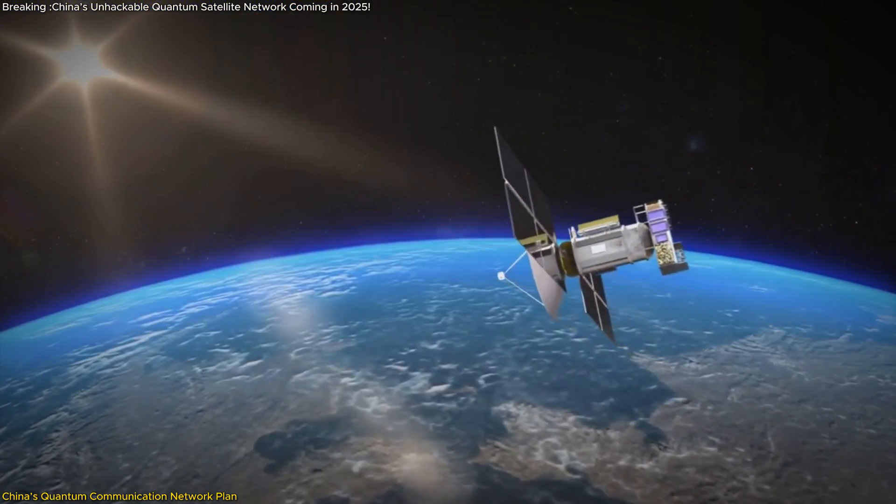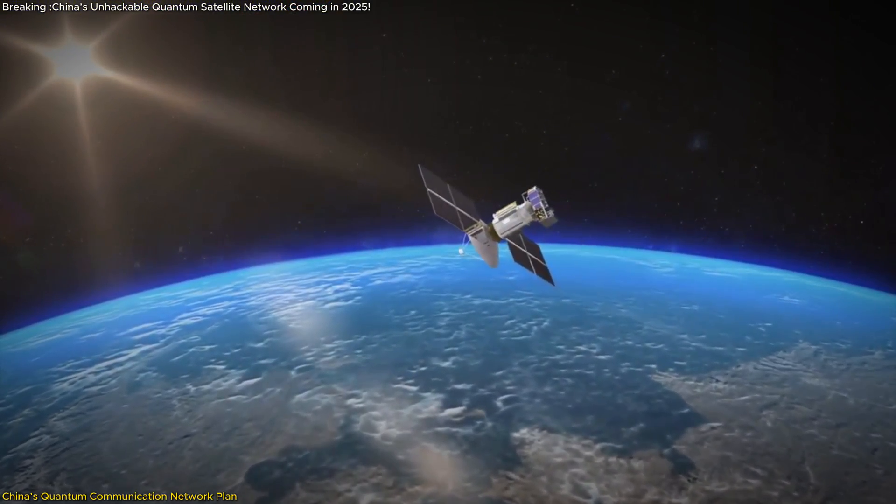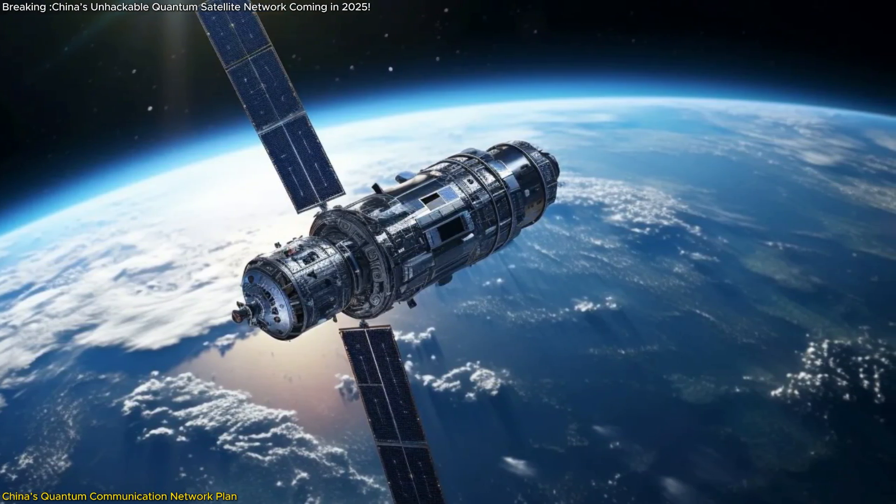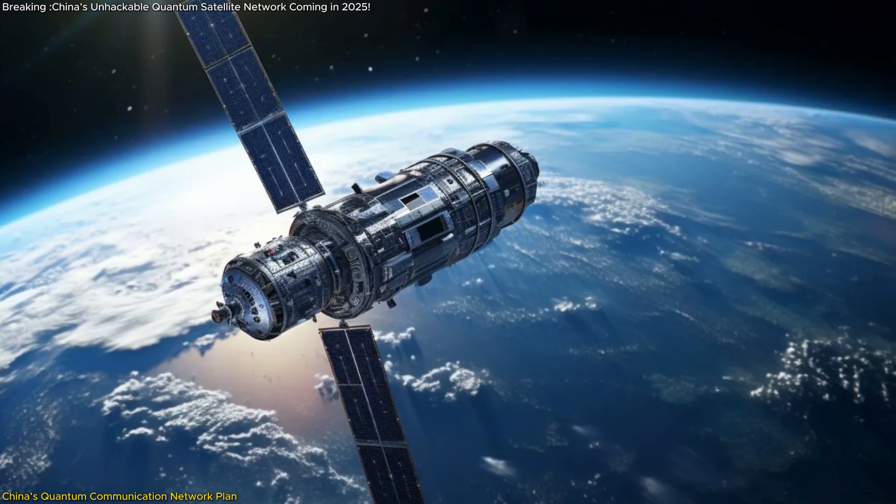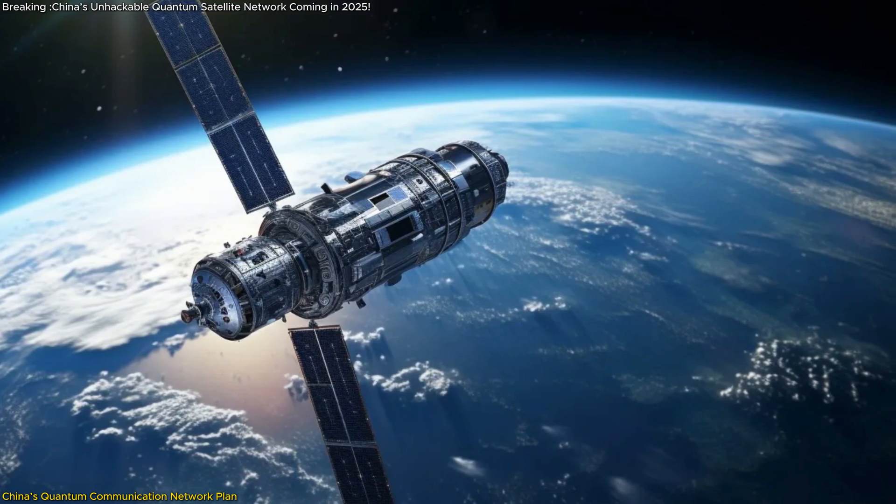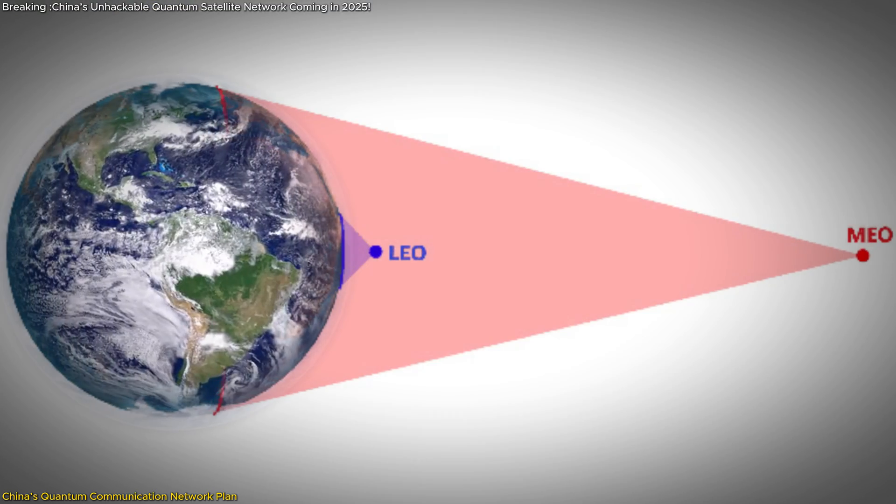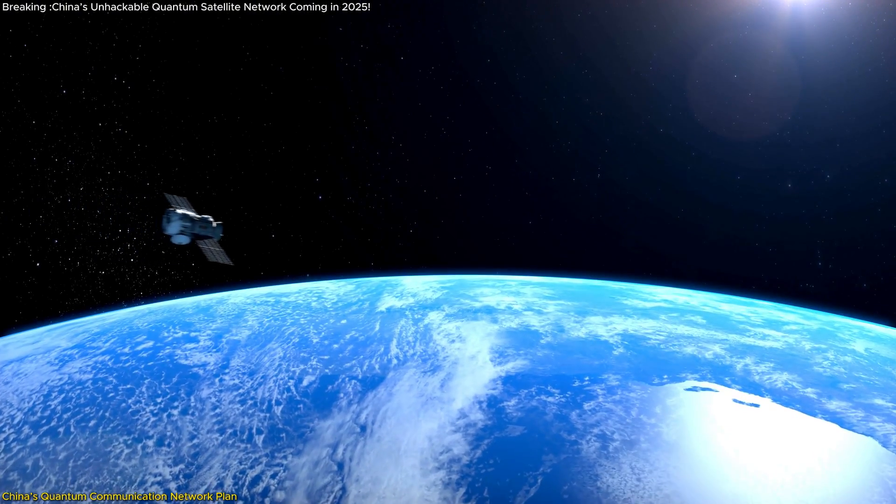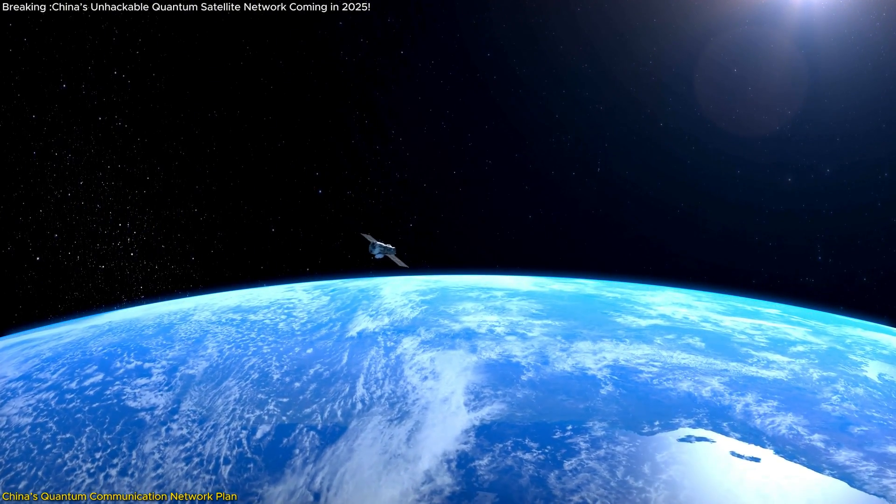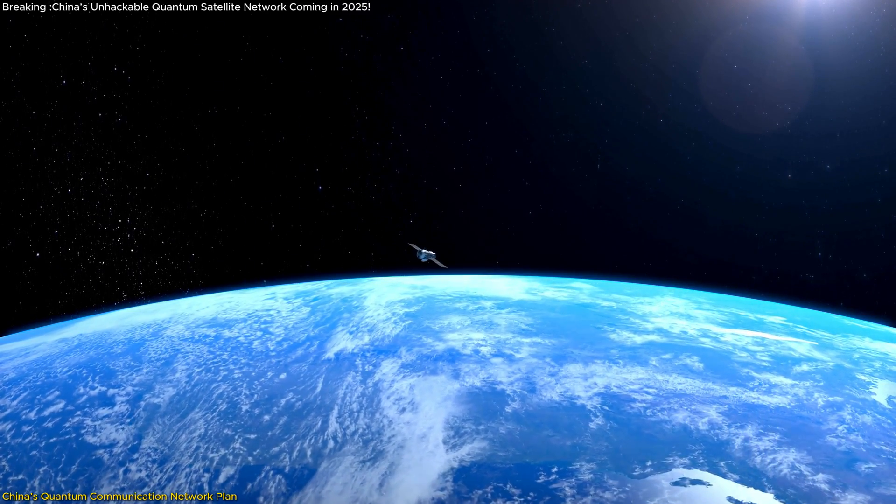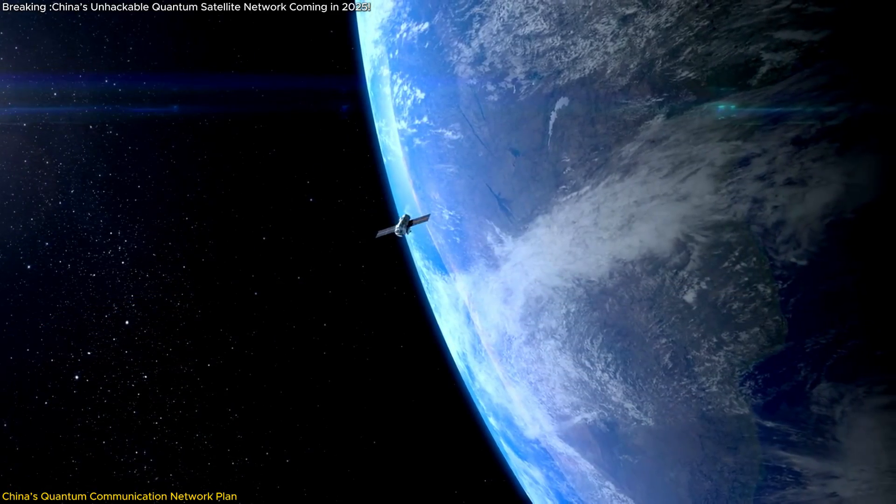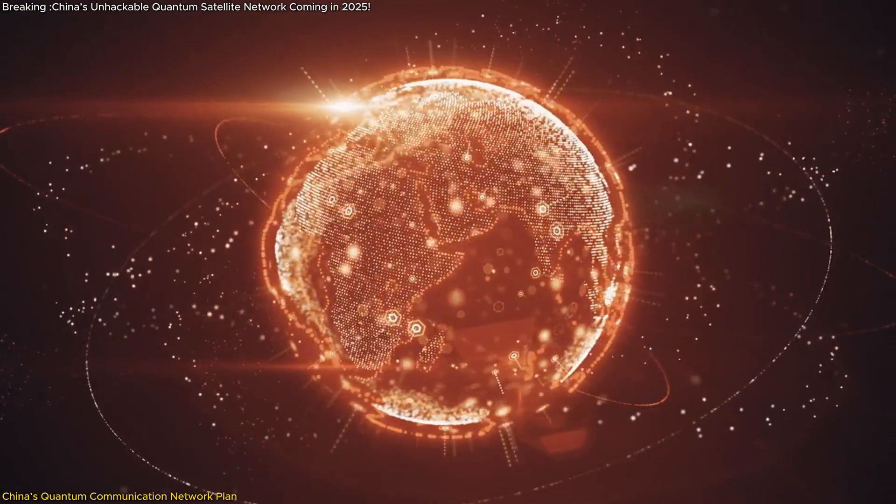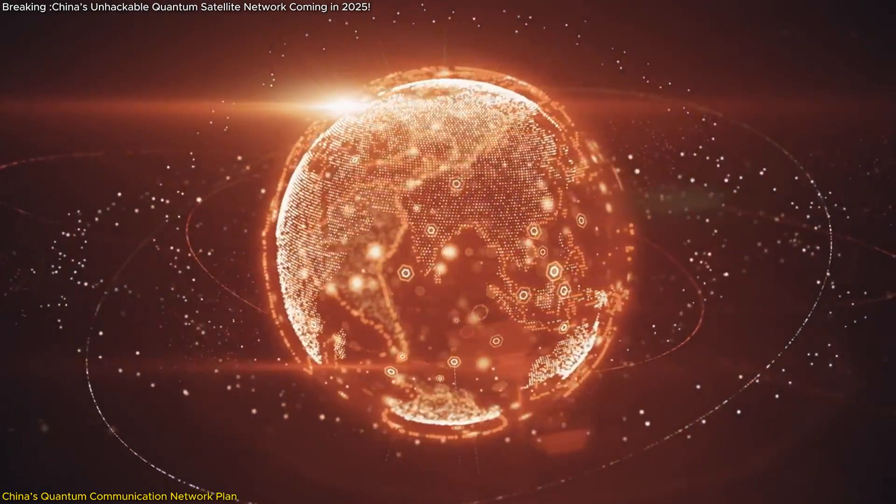But the real game-changer will be the launch of a medium-Earth orbit MEO satellite in 2027. This satellite will provide longer-duration communication windows, allowing for more extensive testing and a greater range of coverage. What makes this plan unique is the way it integrates both LEO and MEO satellites. Low-Earth orbit satellites pass overhead in minutes, making communication brief but offering broader coverage at a lower cost. By combining these with a medium-Earth orbit satellite, which stays in view for a much longer period, China can establish secure communication links that last longer and span larger distances.